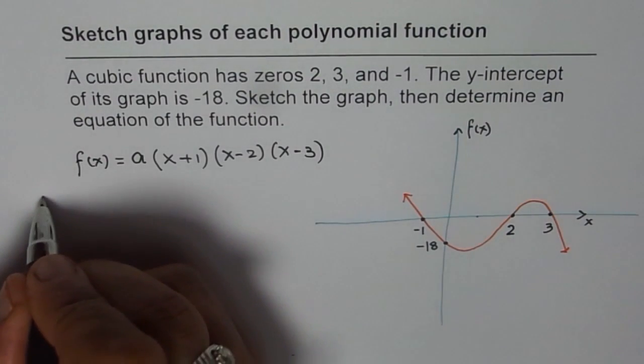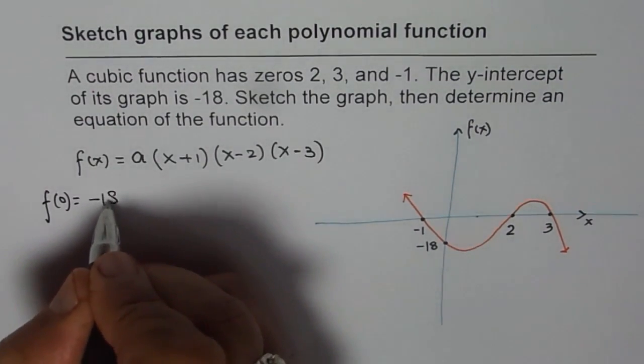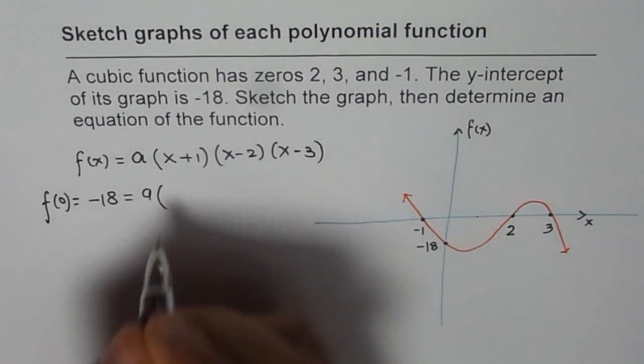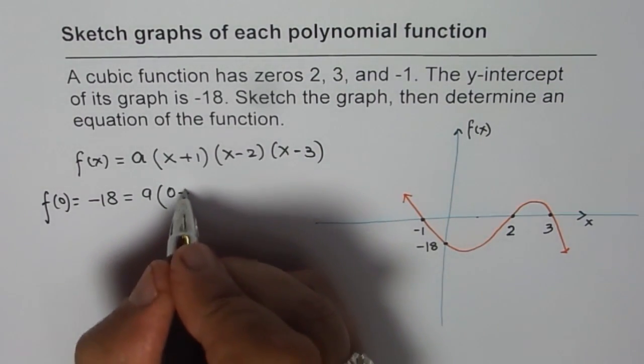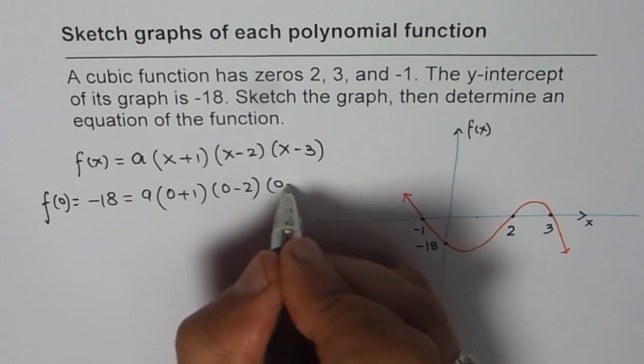So, what I am trying to say here is that what is F of 0 equals to? It is minus 18, right? Minus 18 is equals to A times. We will substitute 0 here. It becomes 0 plus 1. 0 minus 2 and 0 minus 3.